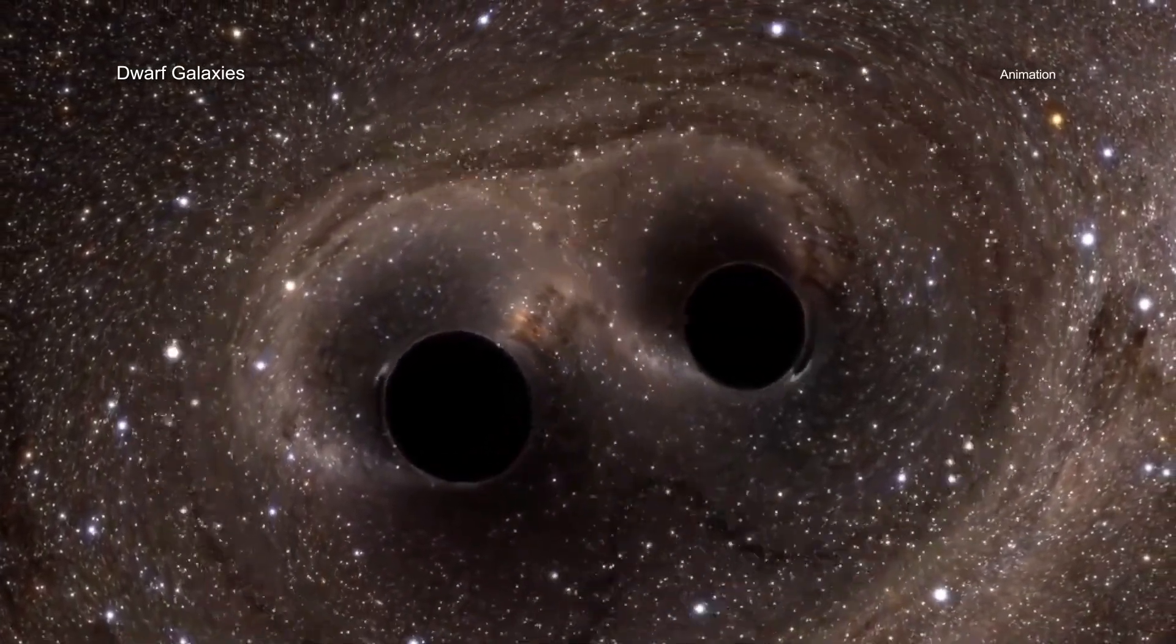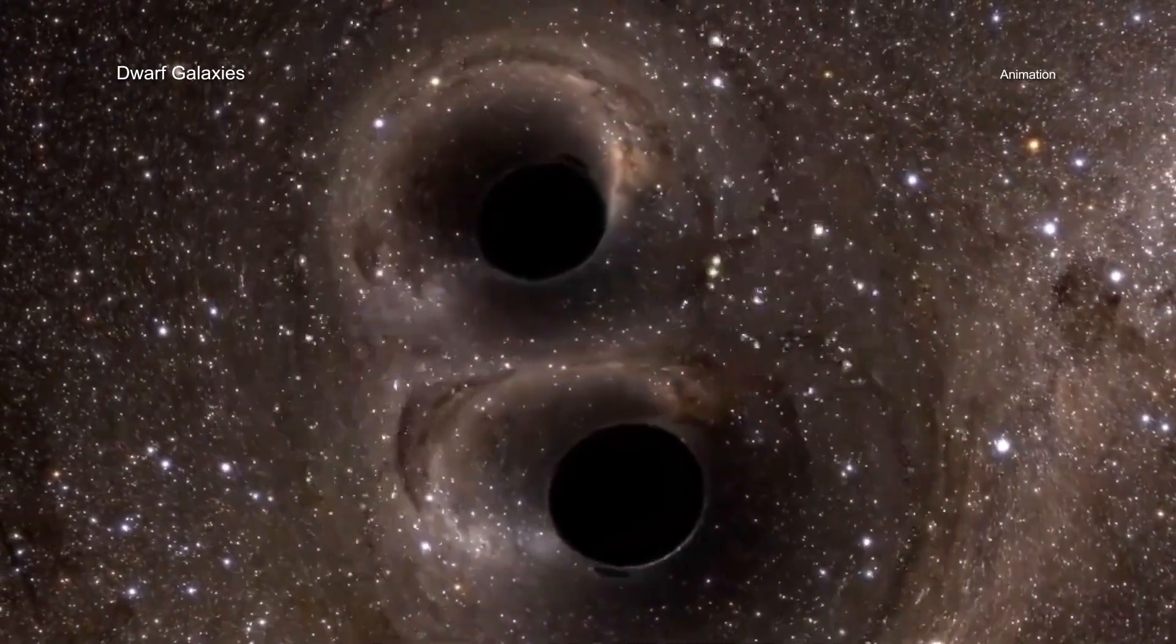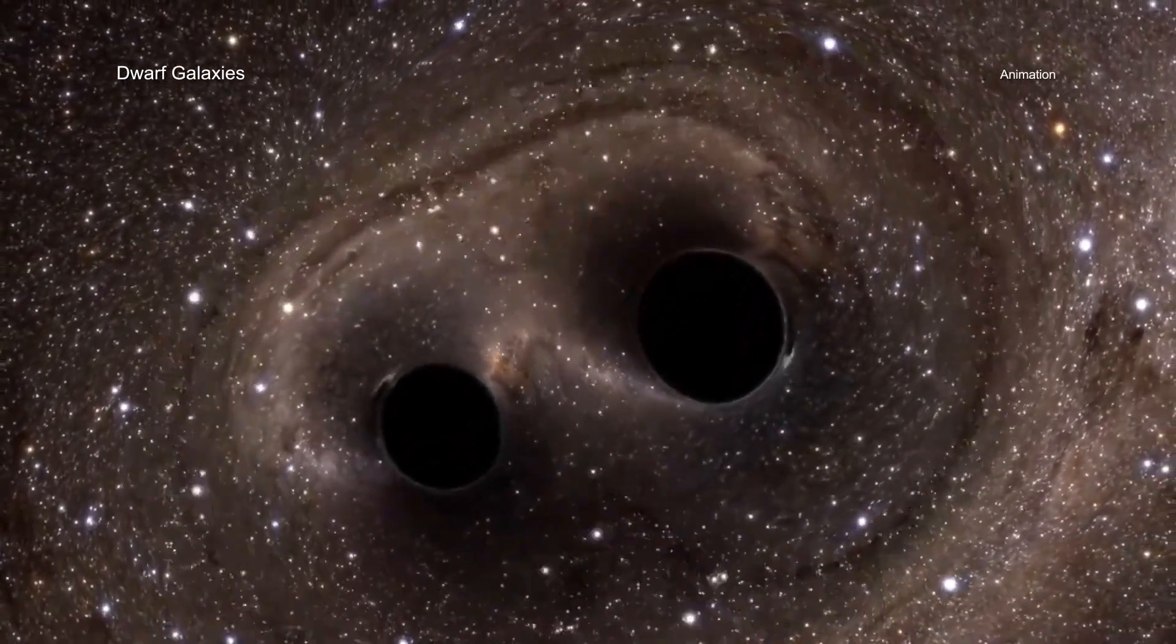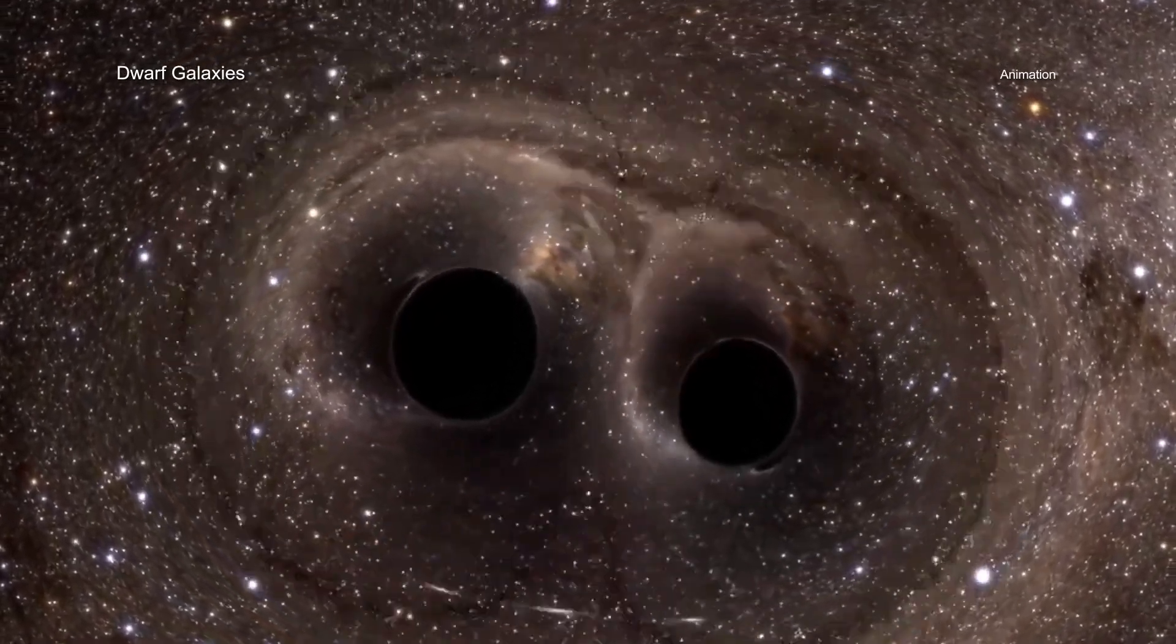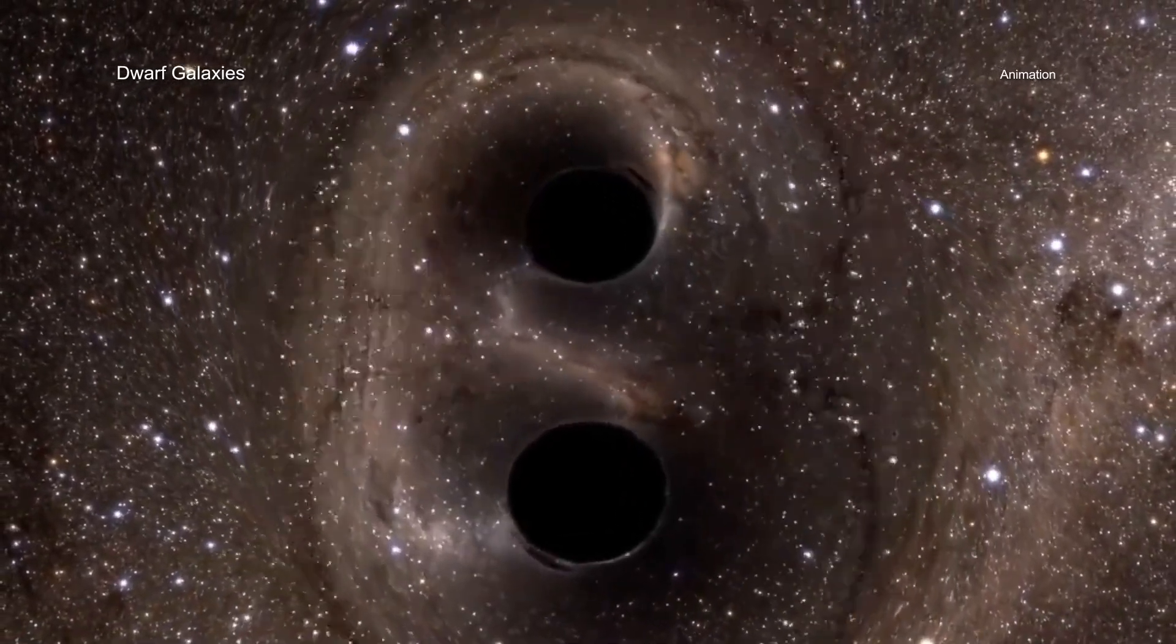Astronomers have found many examples of black holes on collision courses in large galaxies that are relatively close by. But searches for them in dwarf galaxies are much more challenging, and until now had failed.